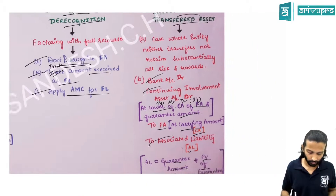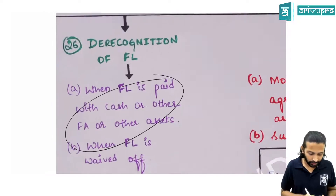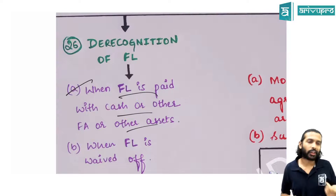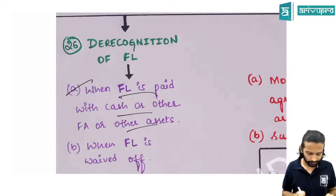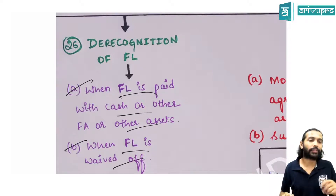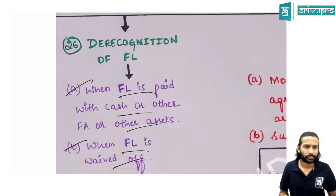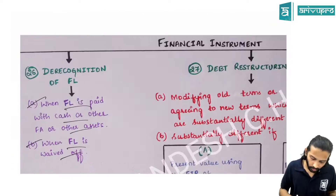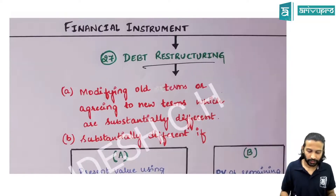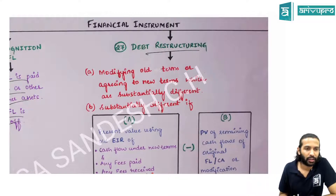Derecognition of a financial liability occurs when: (1) cash has been paid, (2) any other financial asset has been given (e.g., equity shares), or (3) the creditor has waived off the debt — i.e., indicated they no longer want cash.